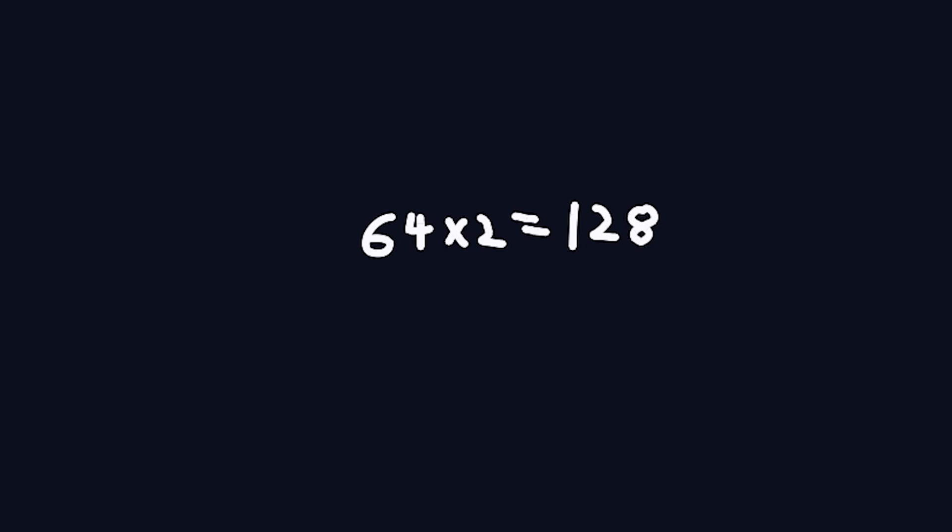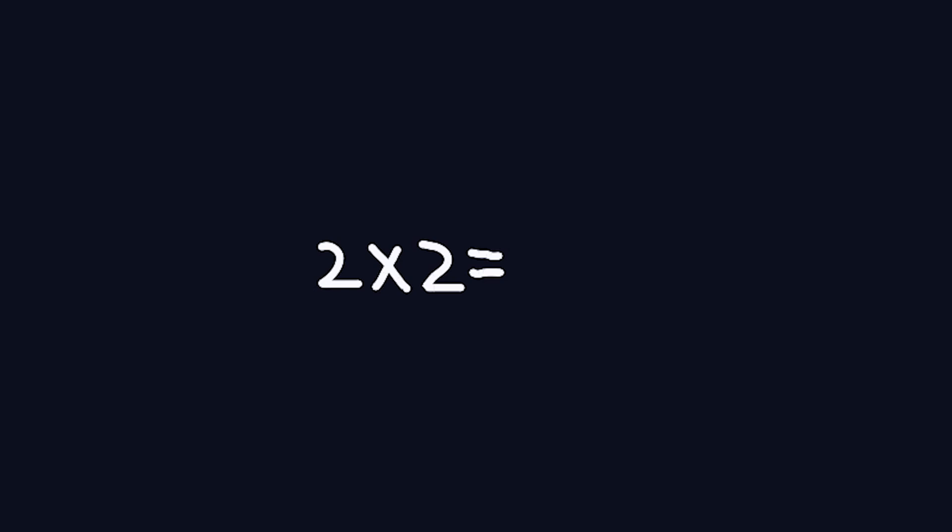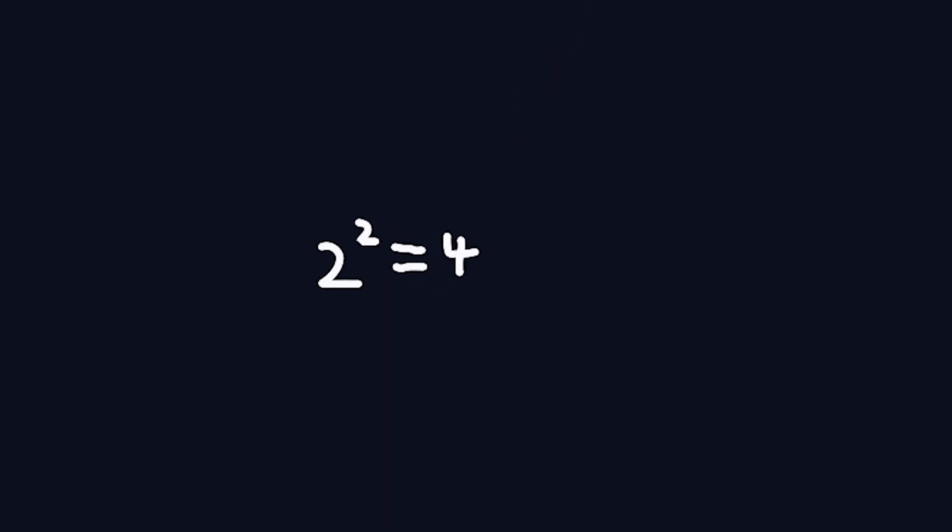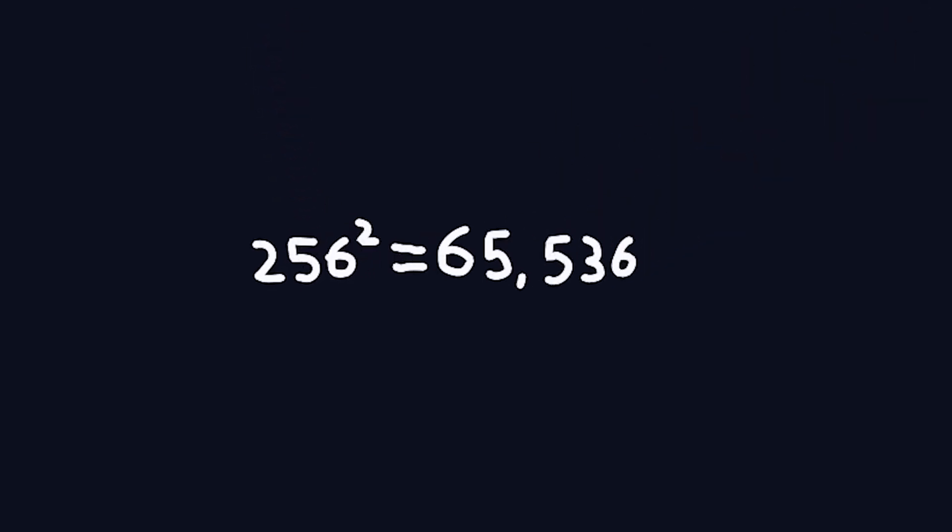This is better, but we can go bigger. If rather than multiplying a number by two, we multiply it by itself, we can grow even faster. Two times two is four, times four is 16, times 16 is 256, times 256 is 65,536.